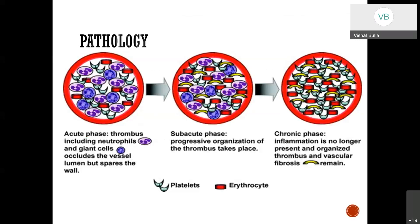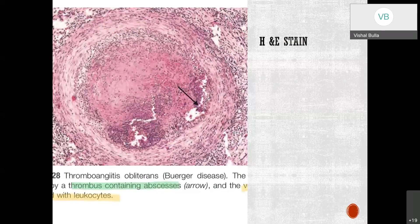Looking at pathology, there are three stages. In the acute phase, a thrombus is formed which includes neutrophils and giant cells; it occludes the vascular lumen but spares the vessel wall, and micro-abscess formation begins. In the subacute phase, organization of the thrombus takes place with micro-abscess recipients. In the chronic phase, inflammation is no longer present and organized thrombus with perivascular fibrosis is seen. An H&E stain slide shows microvascular abscess and occluded thrombus in a patient of TAO.